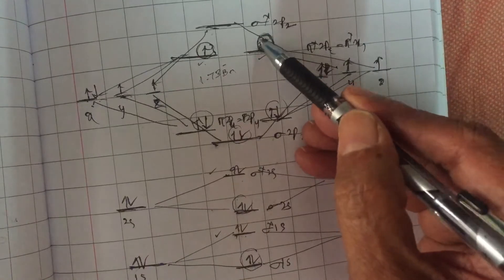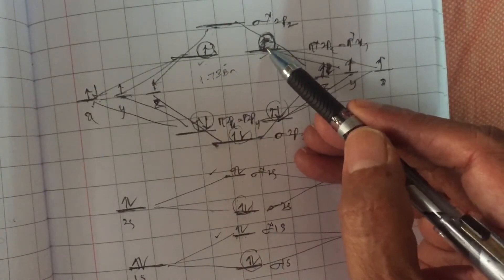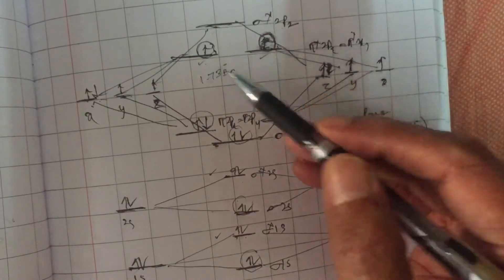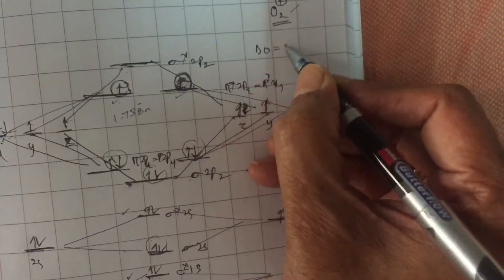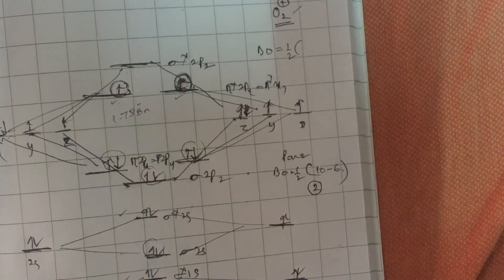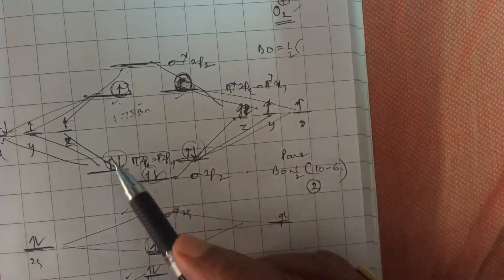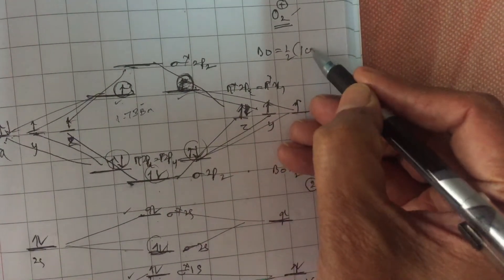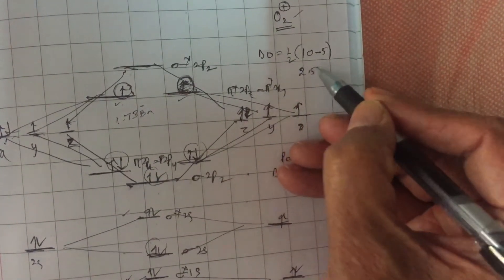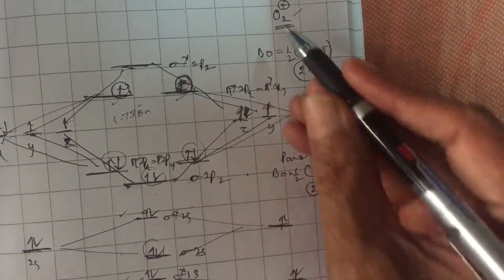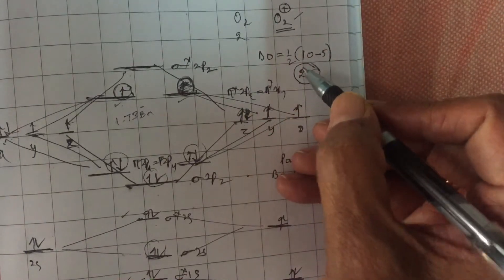And in the formation of O2⁺, we have removed an electron from anti-bonding molecular orbital. Whenever I remove electron from anti-bonding molecular orbital, the stability of system increases. And bond order in this case is equal to half into number of electrons in BMO, which you can see as 2, 4, 6, 8, 10, minus number of ABMOs, you can see them as 5. So bond order is 2.5. If you compare the bond order of O2⁺ to O2, O2 bond order was 2. Now O2⁺ became 2.5.